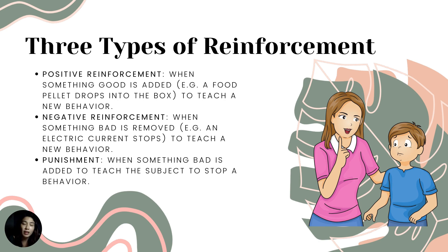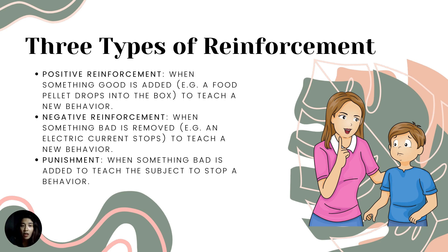For example, in Skinner's experiment, when the rat learned that pressing the lever provides food, something good was added — a food pellet drops into the box — teaching a new behavior. For negative reinforcement, the same concept applies: when something bad is removed, like an electric current stopping, it is an aversive stimulus being avoided — avoiding a negative outcome.